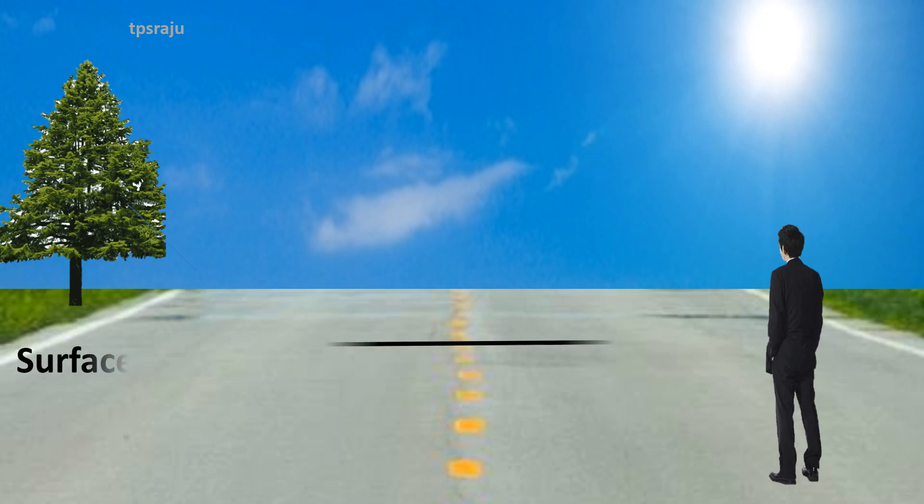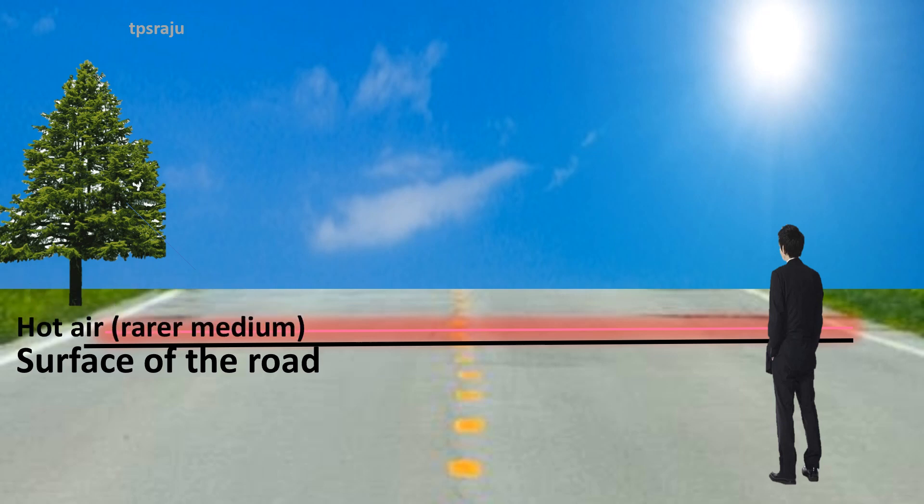During a hot summer day air just above the road surface is very hot, and the air at higher altitudes is cool. Here hot air acts as rarer medium, while cool air denser medium.